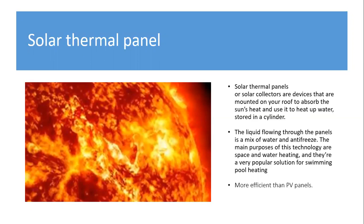Next, the solar thermal panel. Solar thermal panels, or solar collectors, are devices mounted on the roof to absorb the sun's heat and use it to heat up water stored in a cylinder. The liquid flowing through the panels is a mix of water and antifreeze. The main purpose of this technology is space and water heating, and they are a very popular solution for swimming pool heating. Thermal panels are more efficient than PV panels because heat waves carry more energy than sunlight. The metal plate is painted a dark color to maximize the absorption of sunlight.